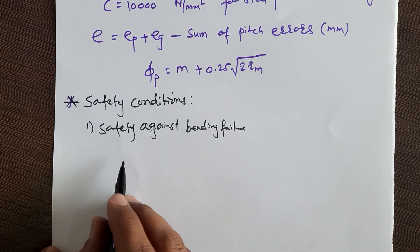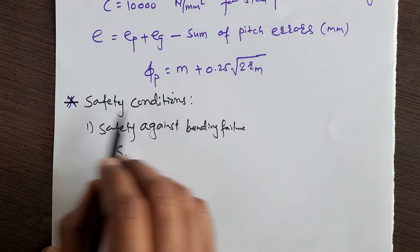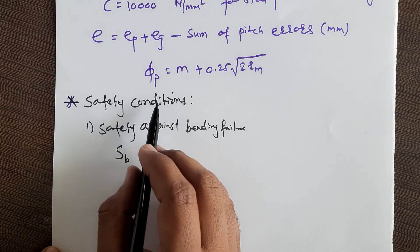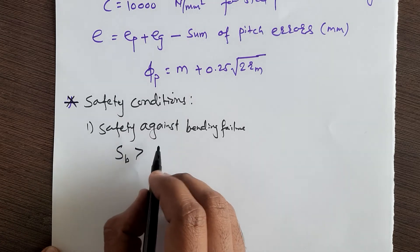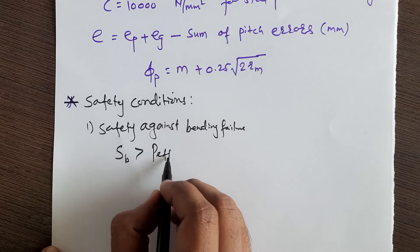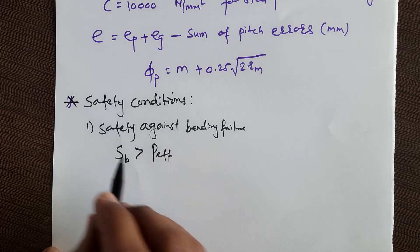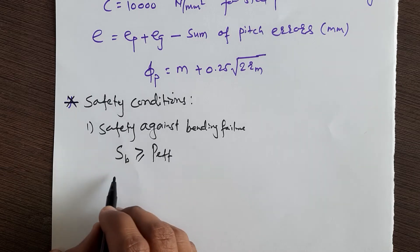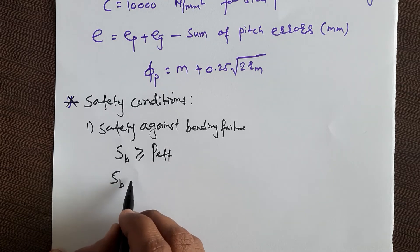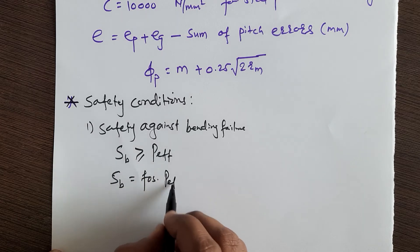To avoid bending failure of a bevel gear, the beam strength should be greater than the effective load. If you introduce a factor of safety, then the beam strength should be equal to — or greater than — the factor of safety multiplied by P effective.